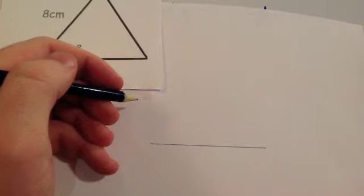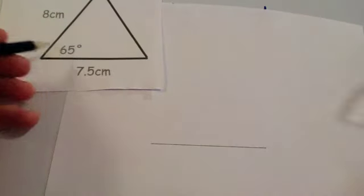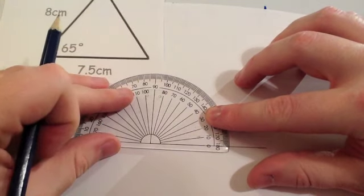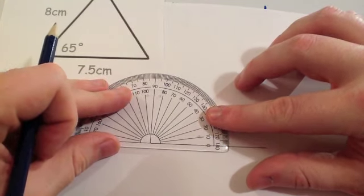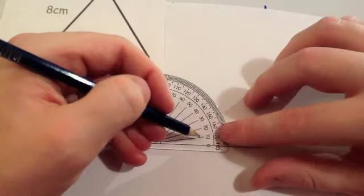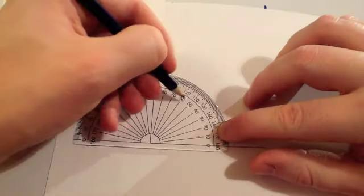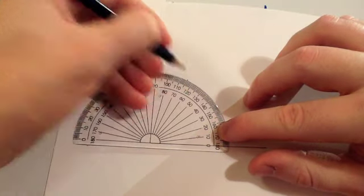Then get your protractor and it's a 65 degree angle. So put your protractor exactly on the end of the line. Make sure the zeros are lined up. So here we've got the zero, yep. And we're going to go around, because the zeros are on the inside, we're going to go around the inside. 65 degrees. So 65 degrees. Exactly there.